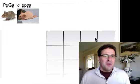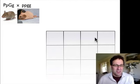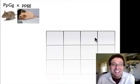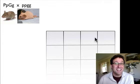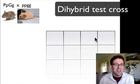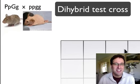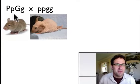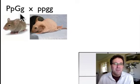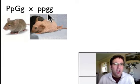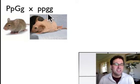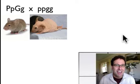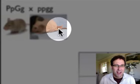The way that we can test whether these are on the same chromosome or not is by doing what we call a test cross. A test cross is when we take one mouse which is heterozygous at both gene loci — that is, it's big P little p big G little g — and we cross it with a mouse that's homozygous recessive at both gene loci. You can see this mouse has prune skin and also the grasshopper gait.